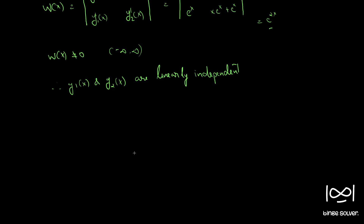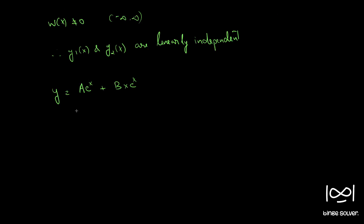Now we have to find the differential equation which has y1(x) and y2(x) as solutions. Since they are linearly independent, we write the general solution as y = ae^x + bxe^x. Let this be equation 1. Now differentiating equation 1 with respect to x: